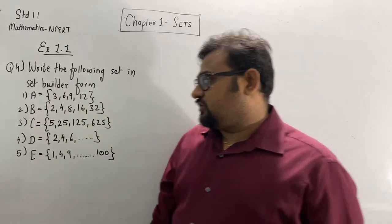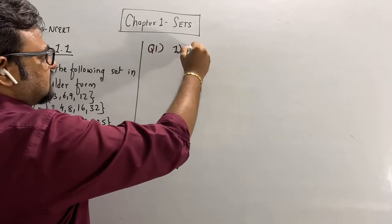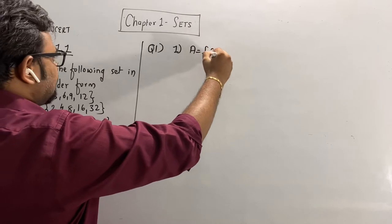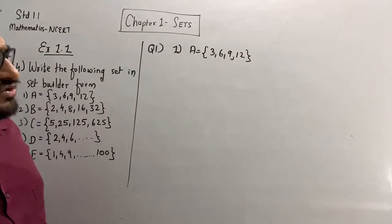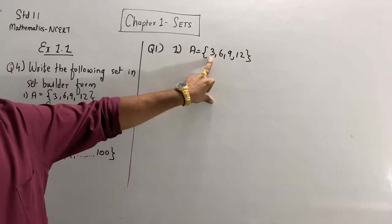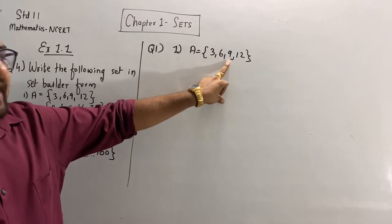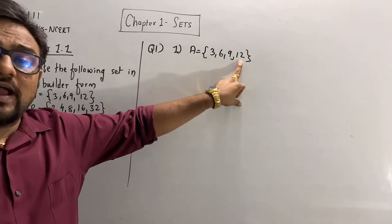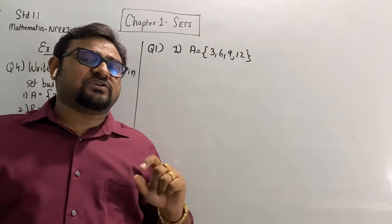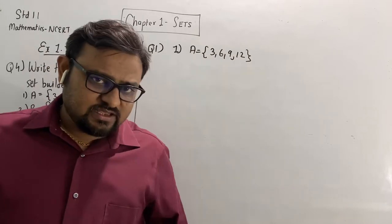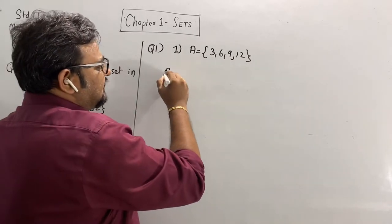Let's start with the first part of question number four. It is given A equal to {3, 6, 9, 12}. Now if you focus here, the first number is 3. Three twos are six, three threes are nine, three fours are twelve. So we can write it down that the numbers are multiples of three, but less than twelve.